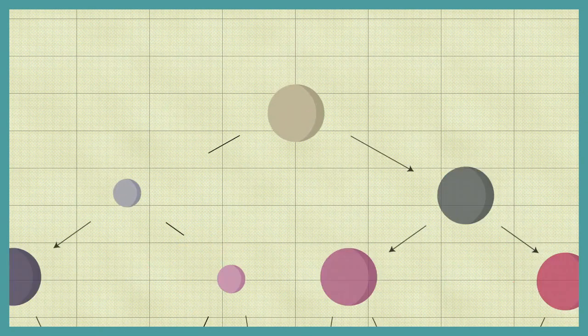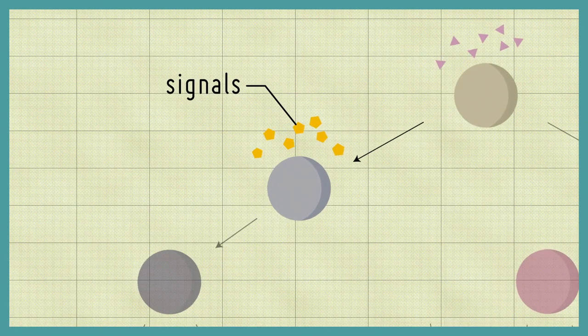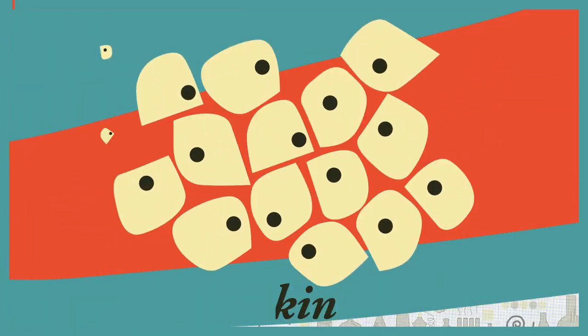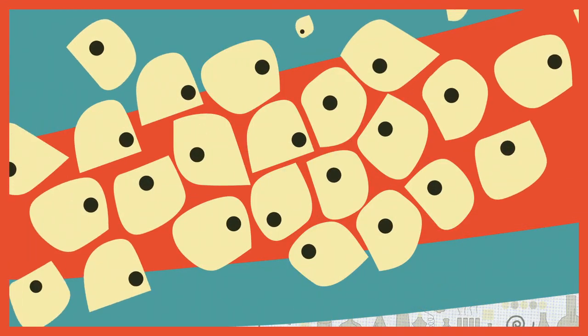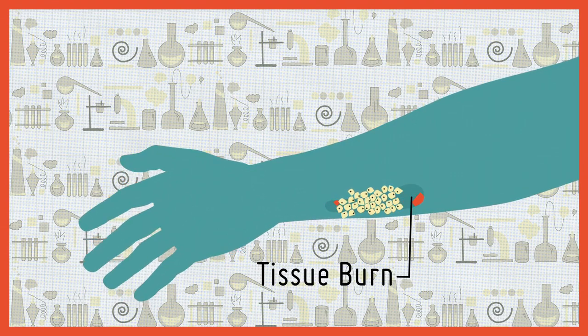By studying the signals required to control how ES cells develop into specific cell types, scientists may be able to develop therapies capable of restoring damaged tissues.